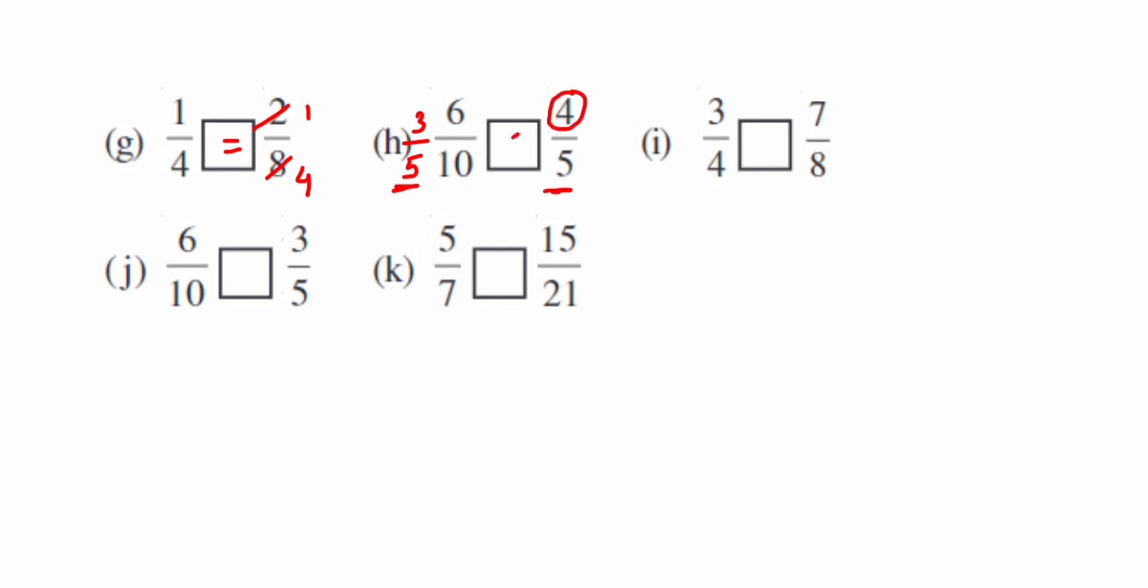Next we have 3 by 4 and 7 by 8. We cannot cancel, so cross multiply in this case. This is unlike fraction given to us. 8 into 3, 3 eights is 24 we'll get. And here 4 sevens are 28 we'll get. Now since 28 is greater than 24, it means 7 by 8 will be greater than 3 by 4.